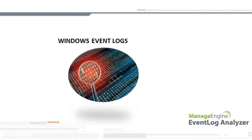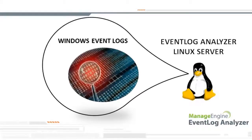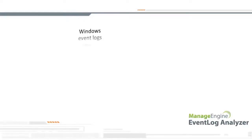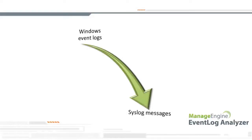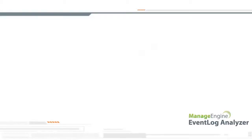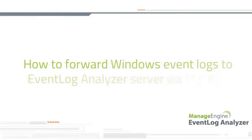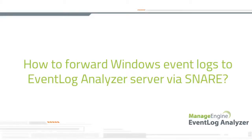Hi! As you know, to monitor Windows events in an Event Log Analyzer Linux installation, you need to convert the Windows messages into syslog messages. You need a tool for this conversion. In this video, I will quickly guide you on how to use Snare Tool to forward the event logs from the Windows host to your Event Log Analyzer server deployed in a Linux machine.